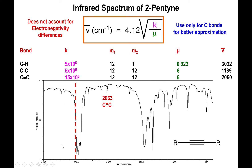But look what happens when you change from a terminal alkyne to an internal alkyne, where you do not have carbon-hydrogen bonds. First, the strong peak above 3100 is no longer observed — it's totally absent in this spectrum. Secondly, even though we do have a triple bond, because the two alkynes give a symmetrical picture of the molecule, the more symmetry you have, the lower these peaks tend to be. So we go from a medium-strength peak to one that's very hard to detect — almost noise — showing up at 2163.